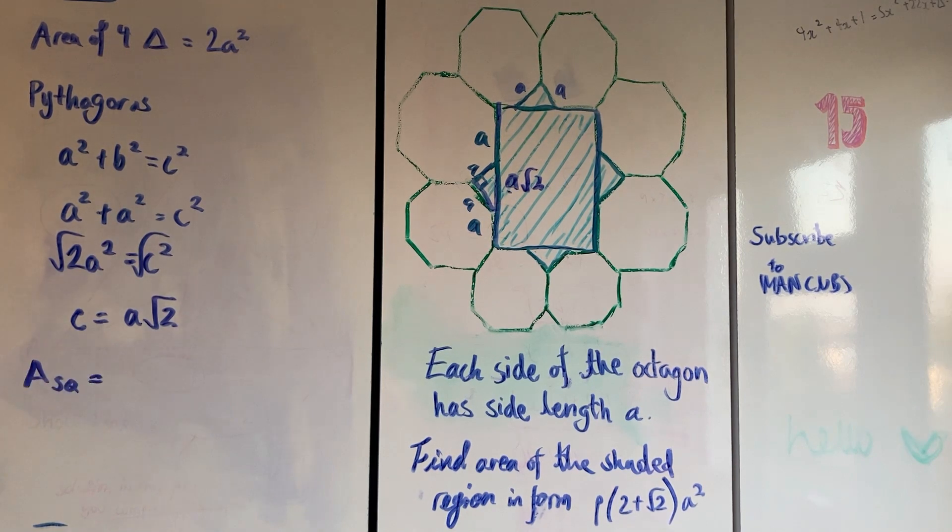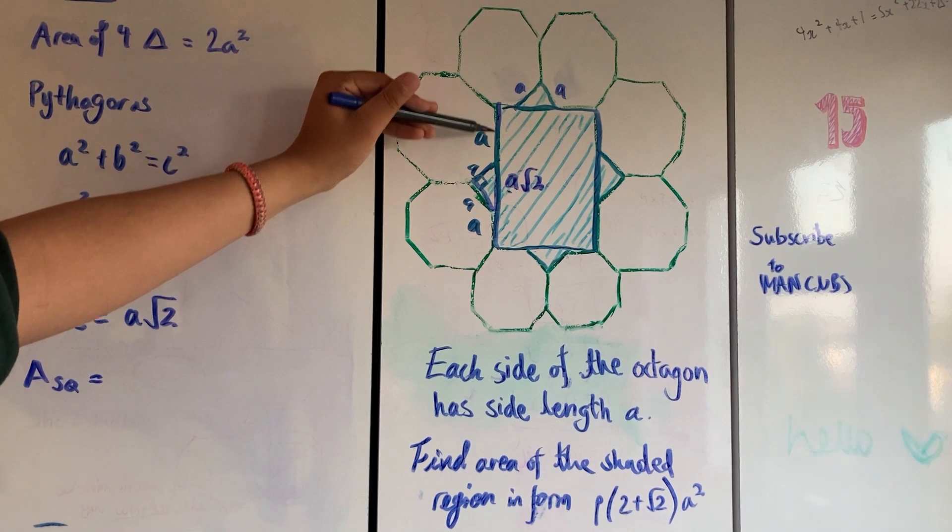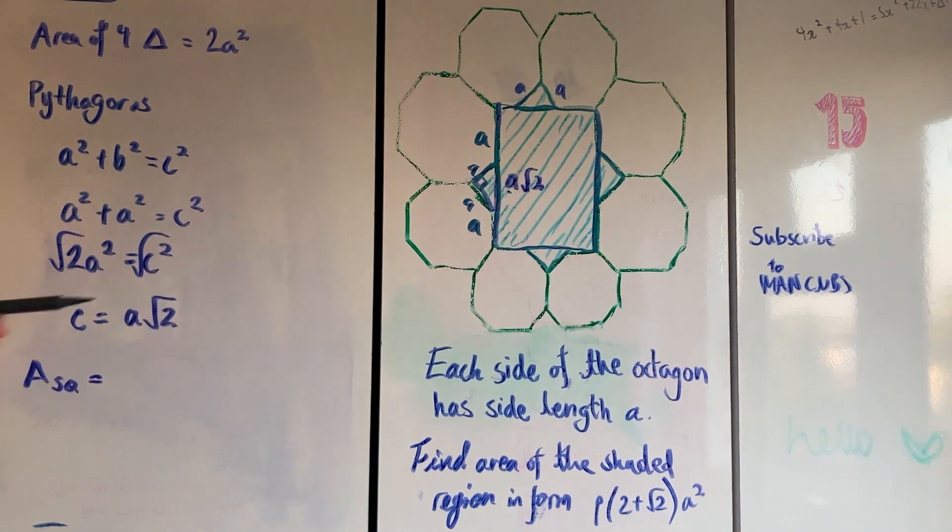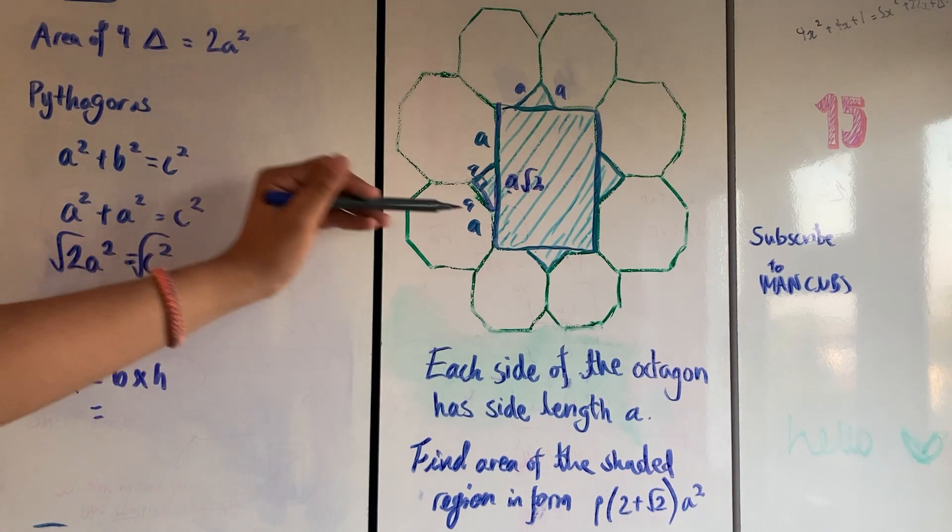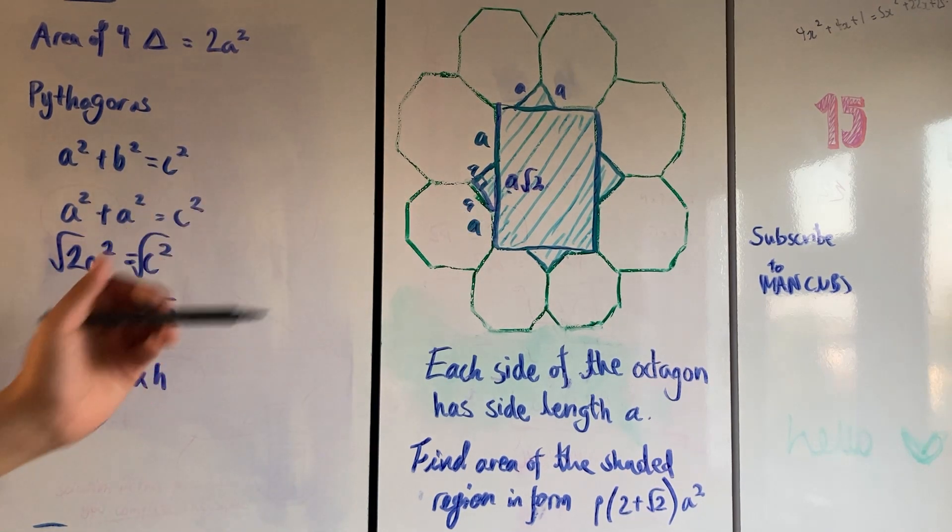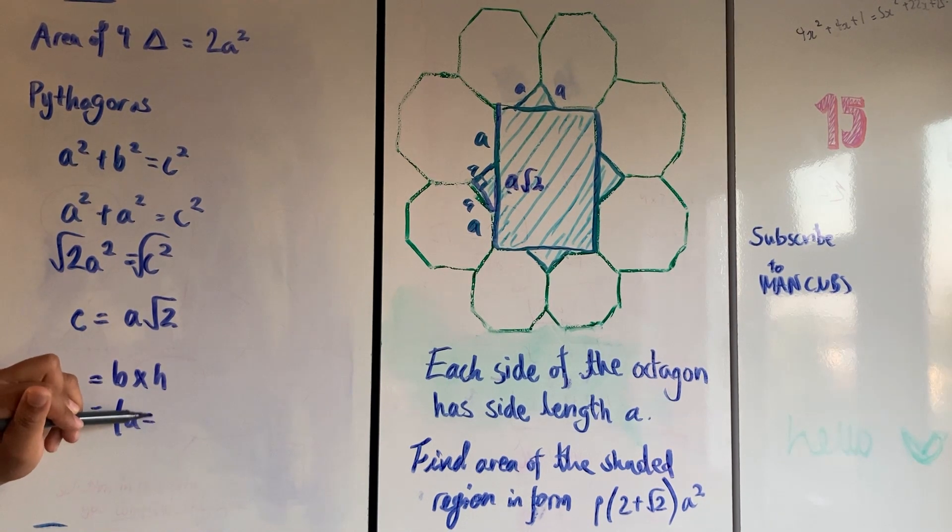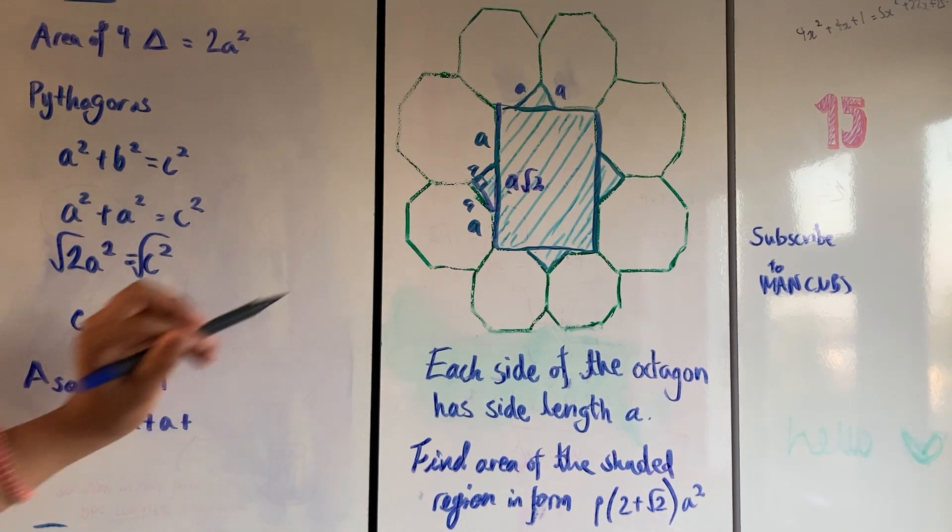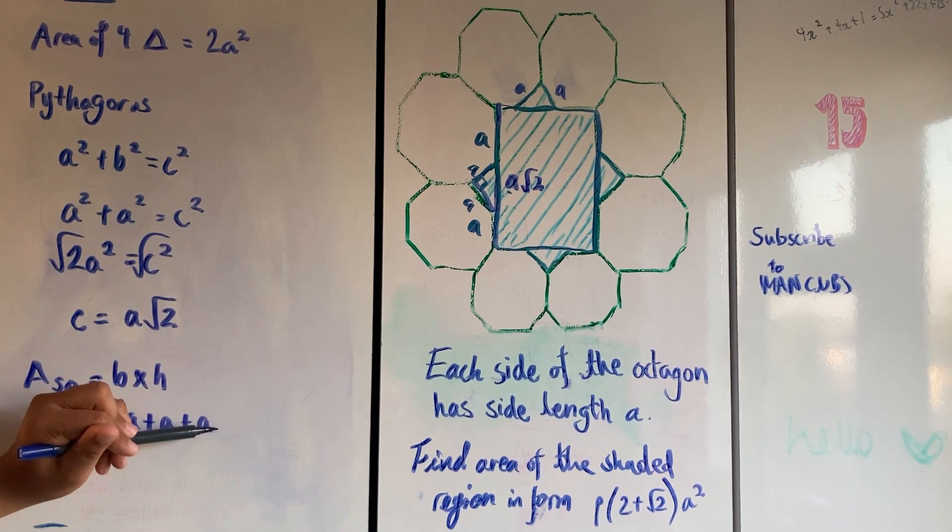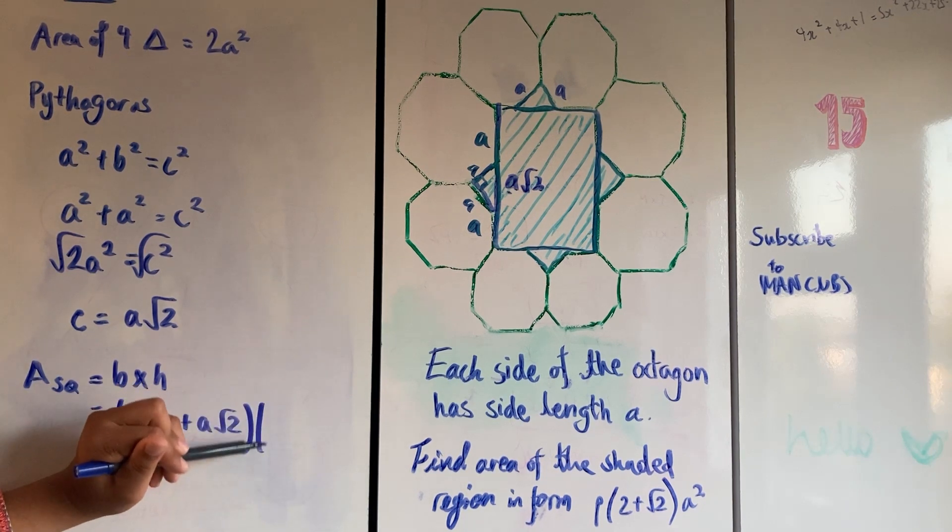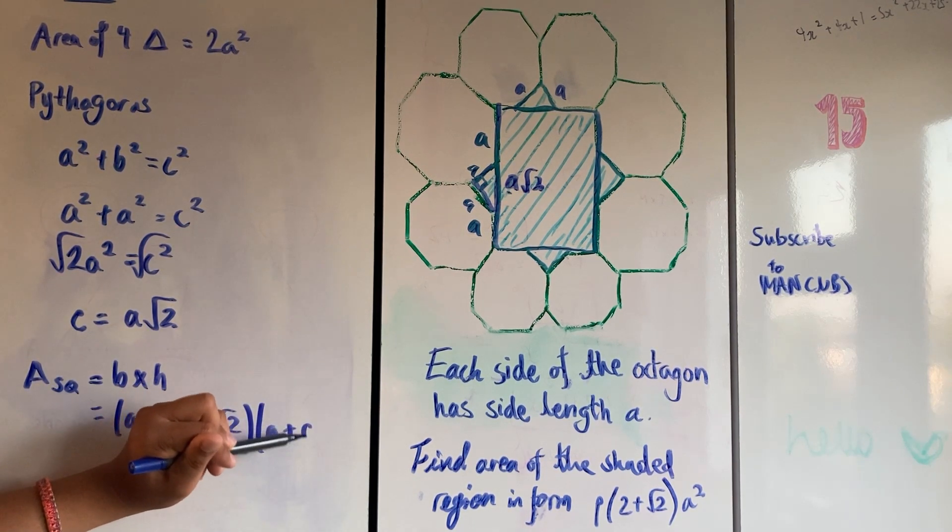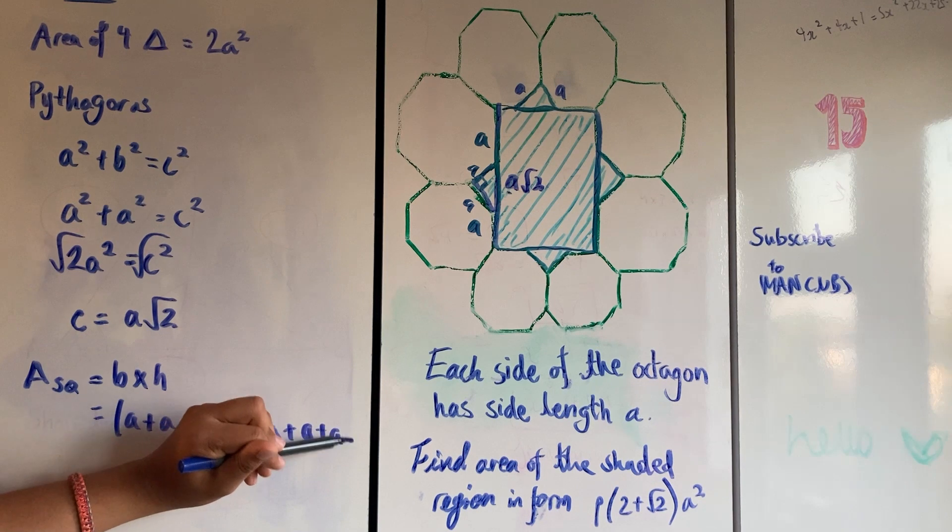The area of the square is going to equal... we're going to add up all those individual lengths together. Let me write the formula first: base times height. Let's add this up. It's going to be a + a because we've got two a's there, and then we're also adding on our a√2 that we got from earlier. Because we're multiplying it together, I'm just going to write it again for simplicity.